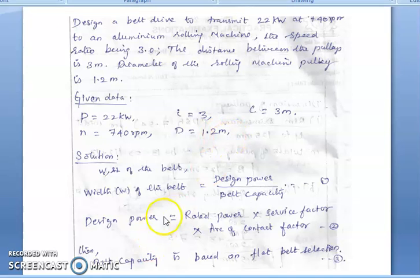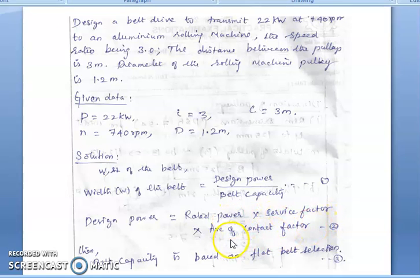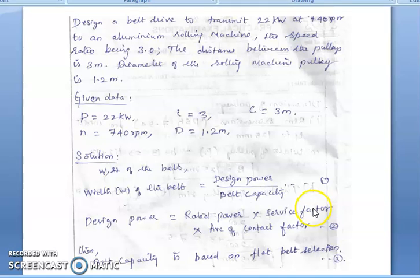From this data, we are going to find out the width and length of the belt. The width of the belt equals design power divided by belt rating. Design power is the product of rated power multiplied by service factor multiplied by arc of contact factor. The rated power is 22 kW as given in the problem.